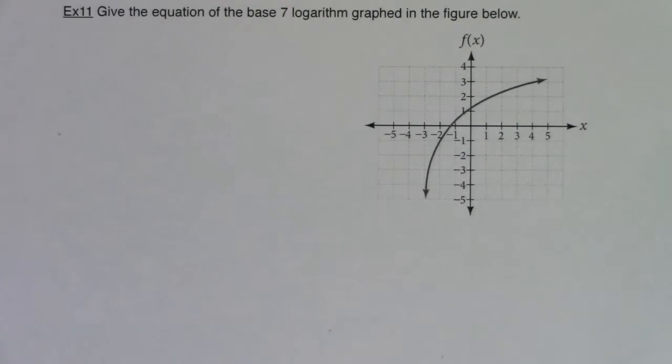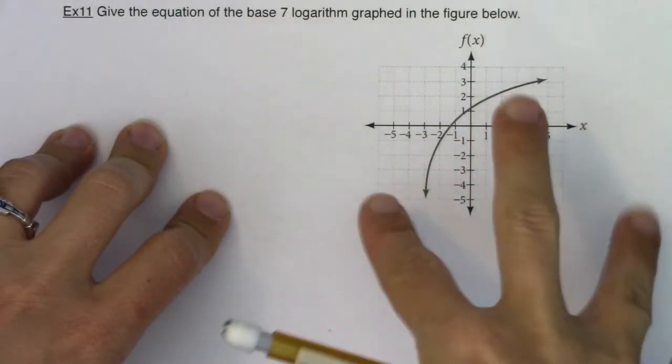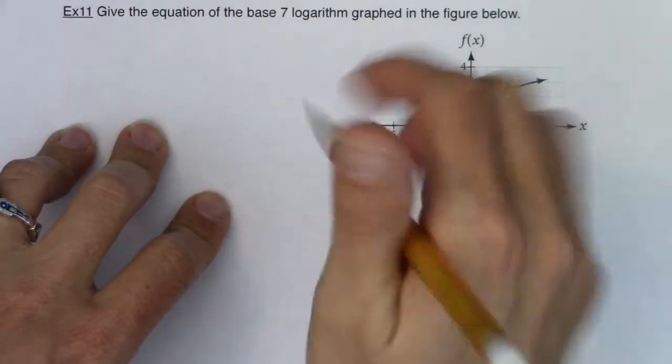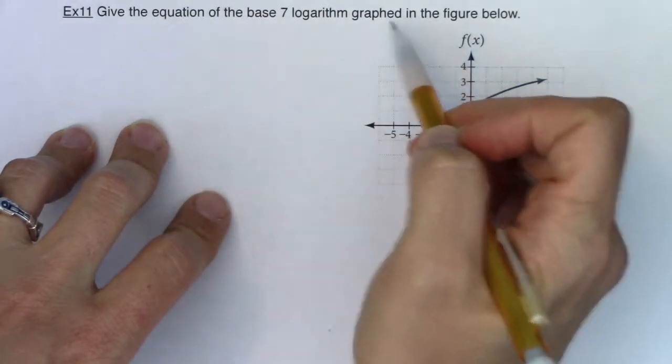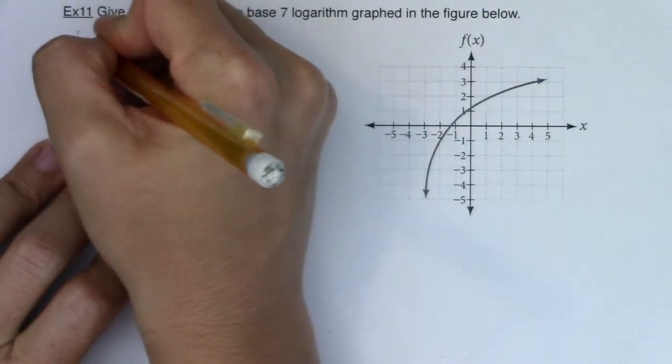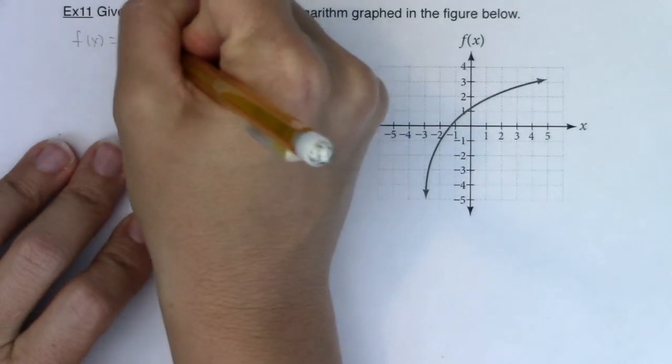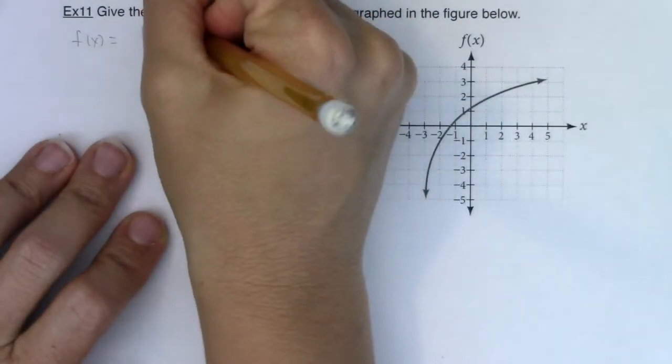Hey Math 31, welcome to our last example. With this example we're going to work backwards in that I'm going to give you a graph, and from this graph we can see some of the traits. From this graph and the traits that we can pick apart, I want you to give me the equation of the base 7 logarithm graphed in the figure below. When I say give me the equation, that means I want the ultimate function that we're dealing with. It'll be log base 7 of something, but let's talk about the different transformations that we can go through.